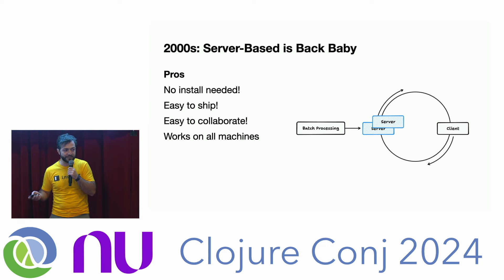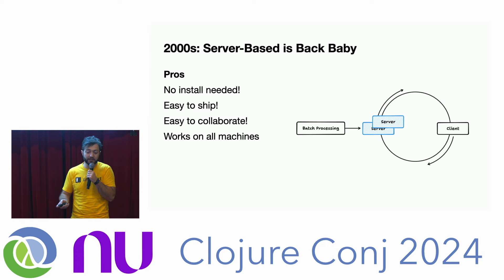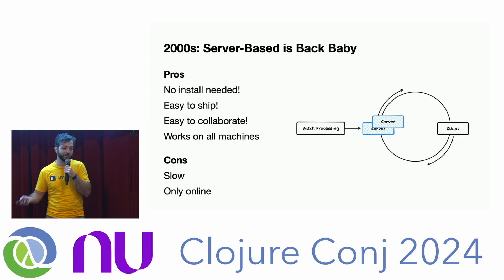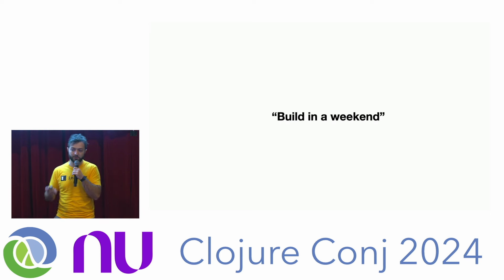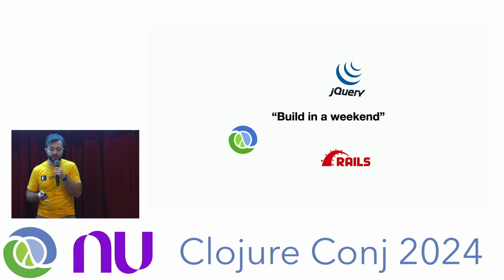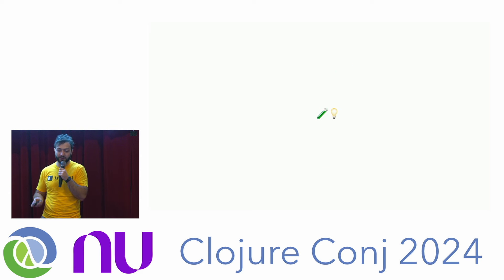Via Web was arguably the first web app. Amazon came out. Salesforce eventually said in 2000: software is over, everything is a web app. And we're back to server-based apps. All the pros return — no installation, easy to ship, easy-ish to collaborate, works on all machines. Around the 2000s we built tools to make server-based apps easier: Clojure, Rails, jQuery. Suddenly you could build billion-dollar companies in a weekend or a month.